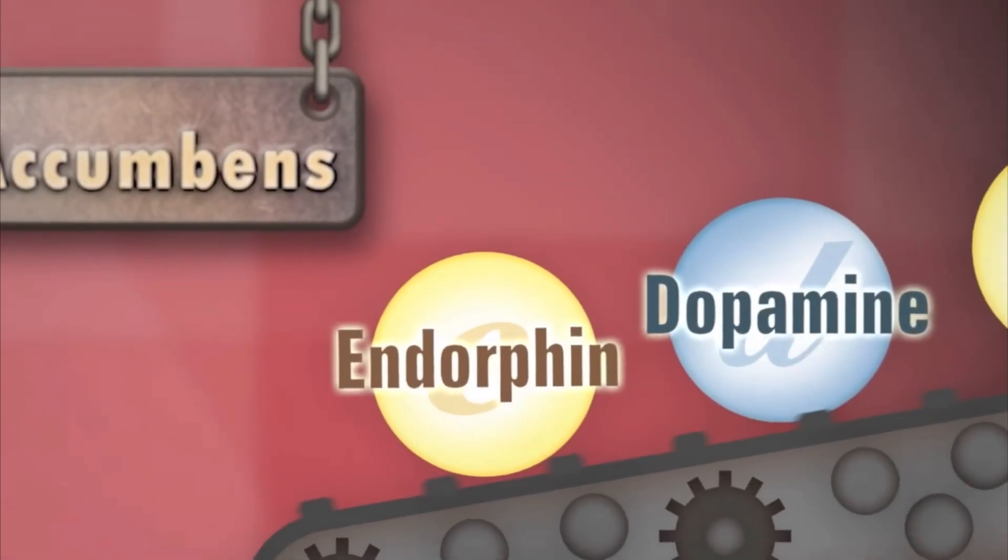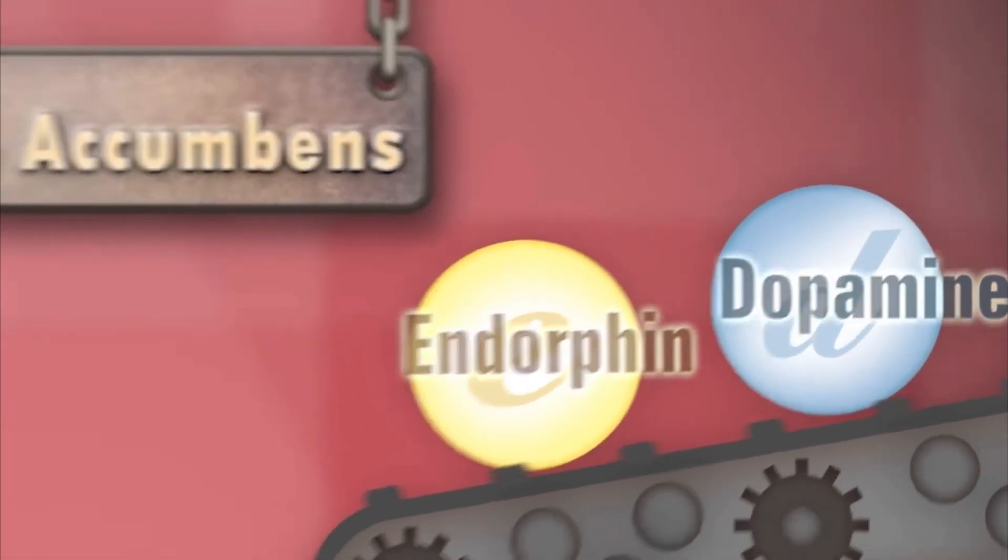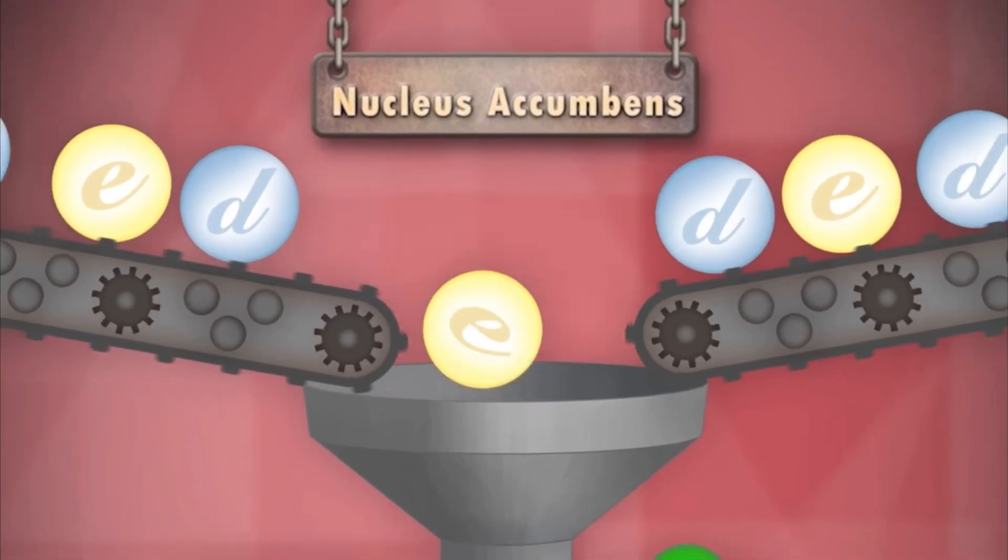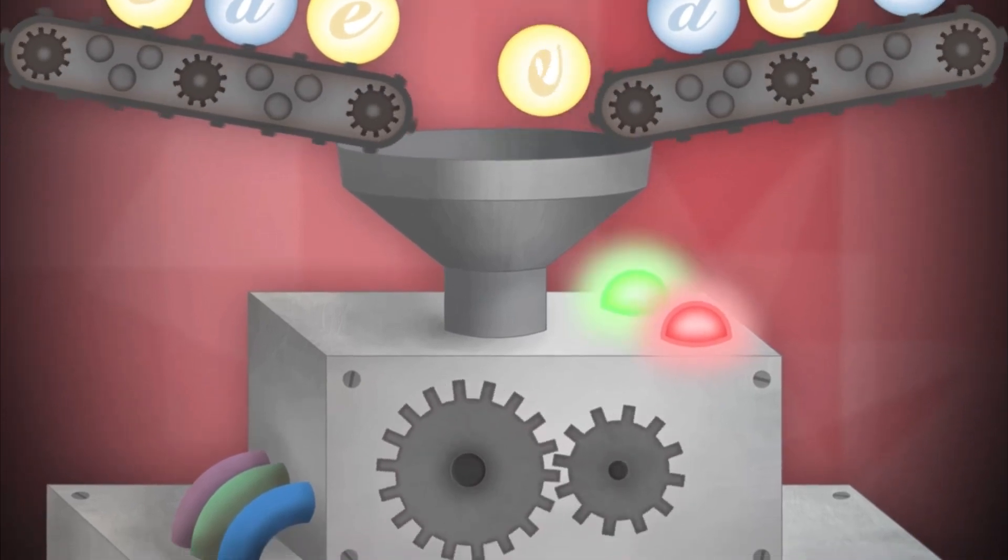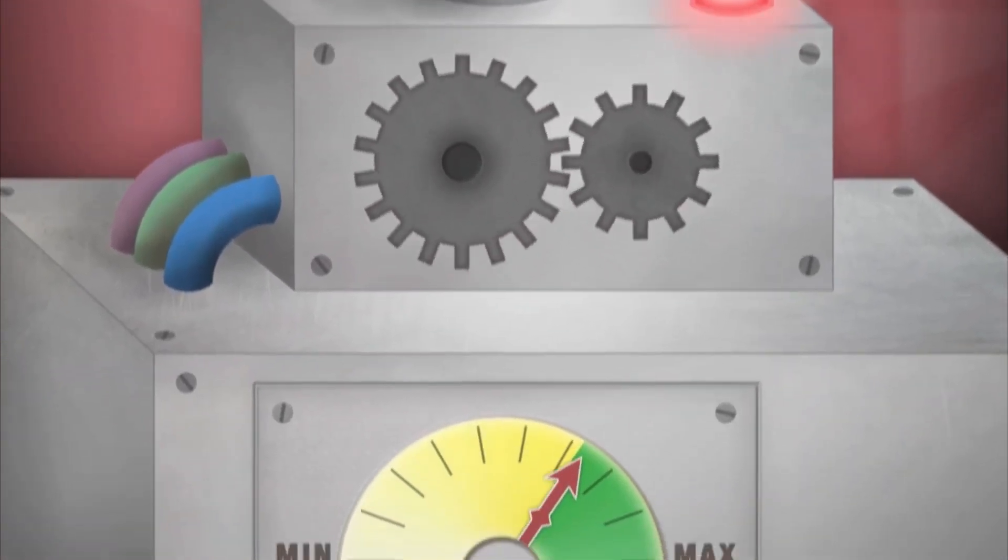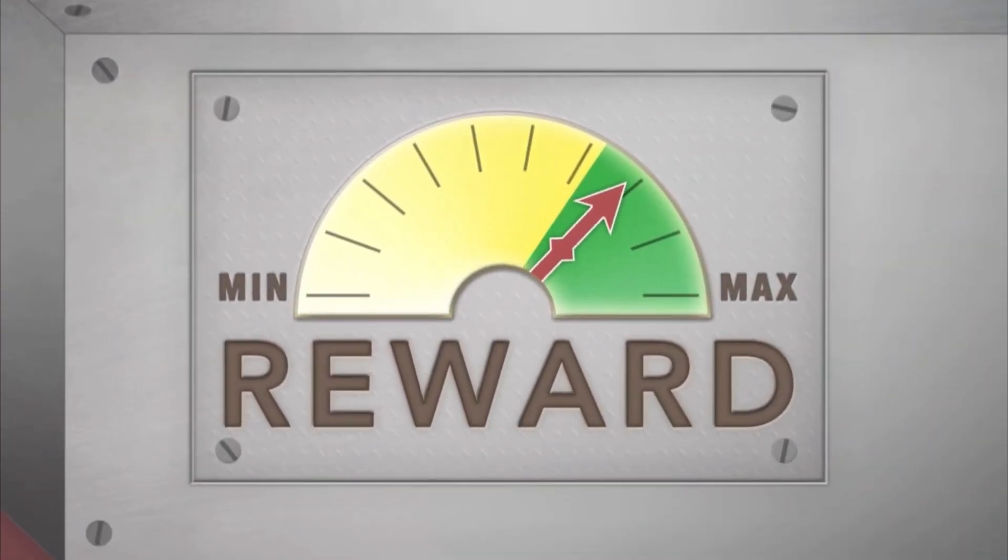Endorphins, our body's primary natural opioid, is also released. It is believed that the combined activation of both dopamine and endorphins is what underlies the sensation of pleasure following drug use.